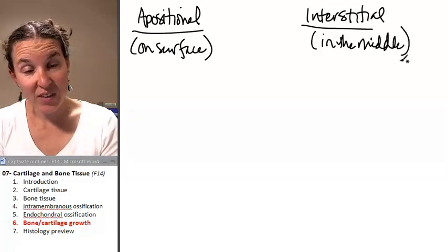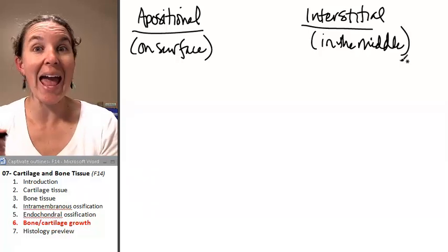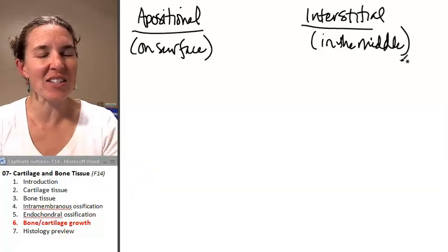Now here's the deal. Both of these types of growth occur in cartilage and bone. However, they're slightly different.